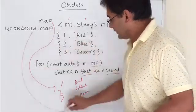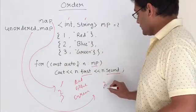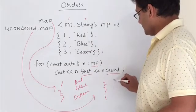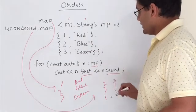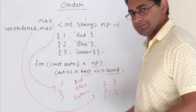But in unordered map, it might be anything. It might print 2, 3, 1 or 3, 1, 2 — in any order because of its internal implementation.